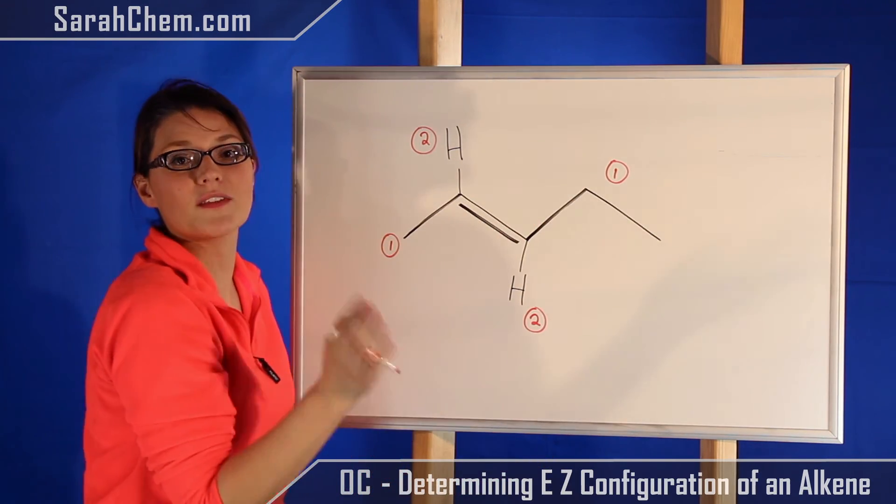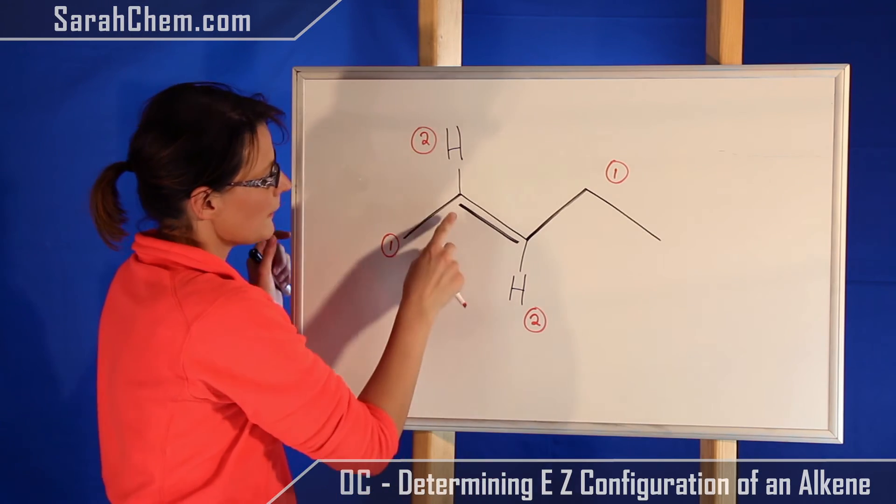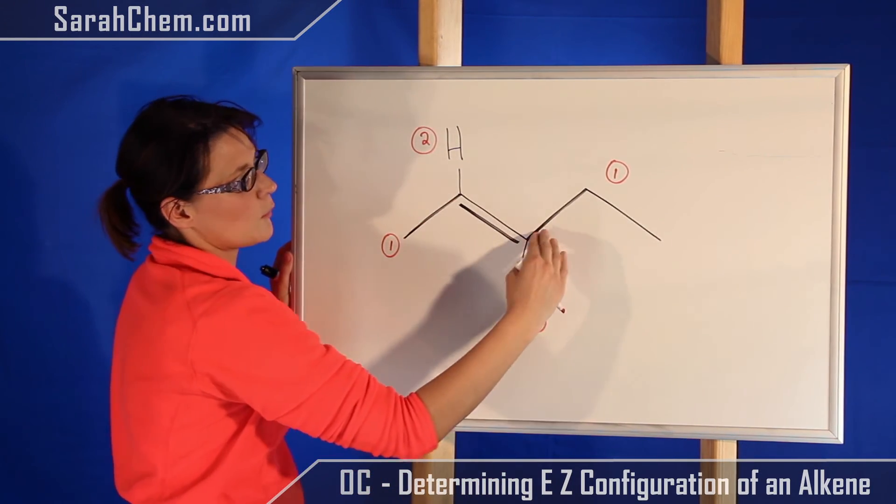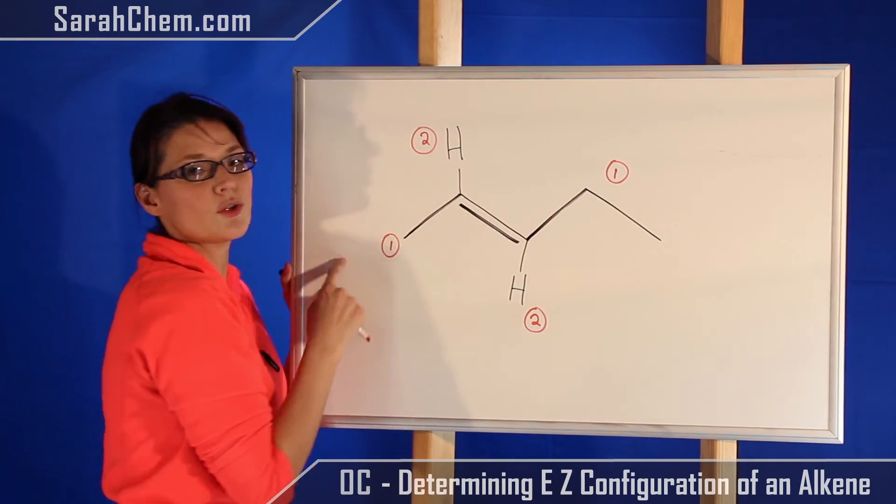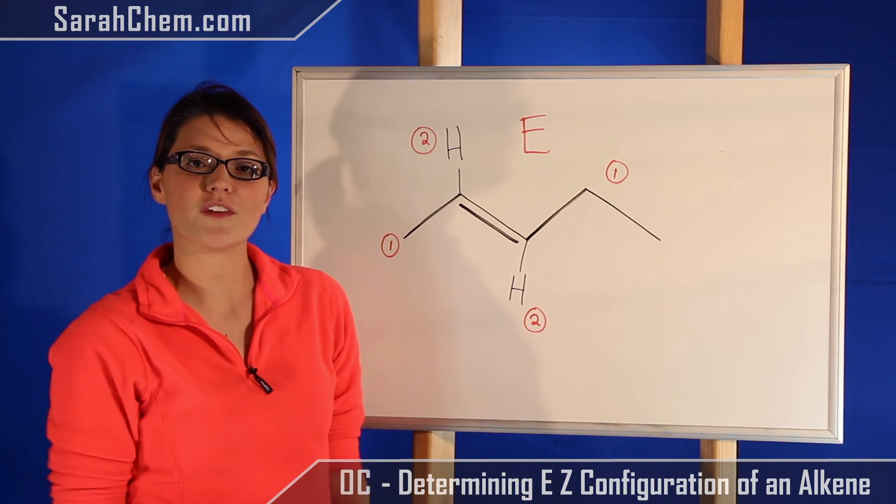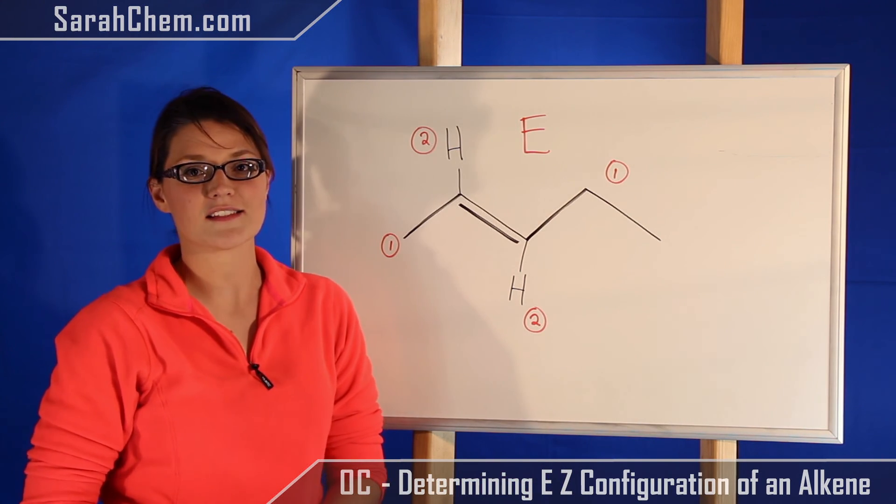So now you might have to alter your perspective a little bit when you're trying to figure out if they're on the same side or opposite sides. But if you look at that double bond, the number one is below and this number one is above, so these two are on opposite sides. So this would be the E isomer, and that's how you figure out your E/Z isomers for alkenes.